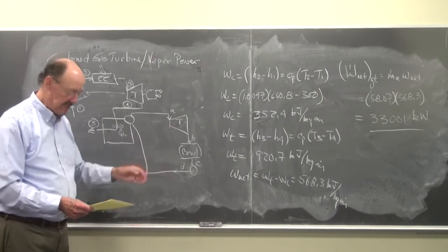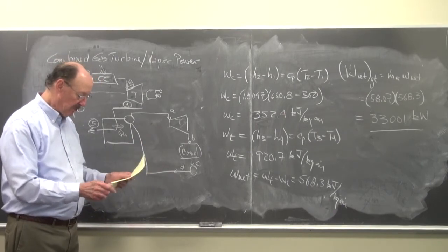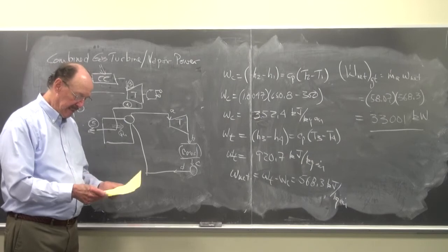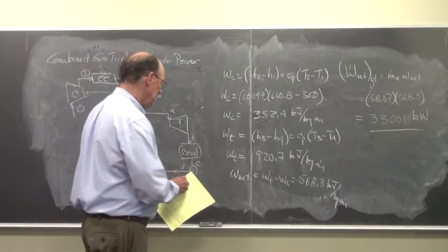Now what we need to do is to find out how much of the exhaust heat goes in here and find out the turbine work for the steam power plant. So let's go through that. And I have to go back and get HA, HB, HC, HD.